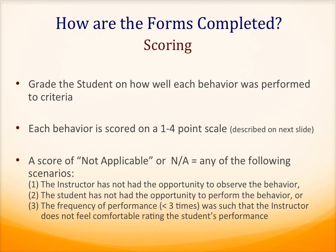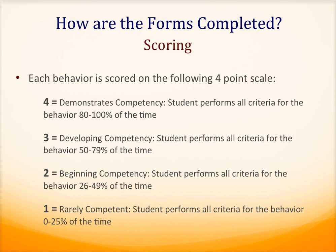For example, if you've only observed a specific behavior two or three times, you may feel uncomfortable scoring the student's performance on that behavior. In this case, an N.A. would be the appropriate score. If an N.A. does not apply to a specific behavior, use the following four-point scale.